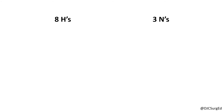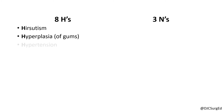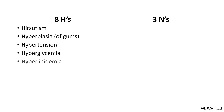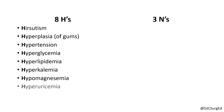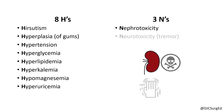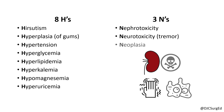Side effects of calcineurin inhibitors include the eight H's and three N's. The H's include hirsutism, hyperplasia, hypertension, hyperglycemia, hyperlipidemia, hyperkalemia, hypomagnesemia, and hyperuricemia. The three N's include nephrotoxicity, neurotoxicity, and neoplasia.